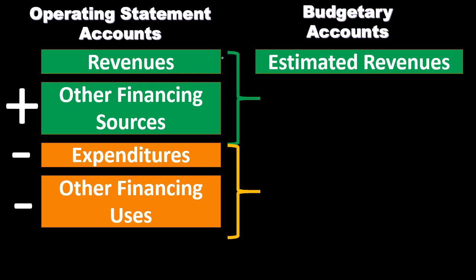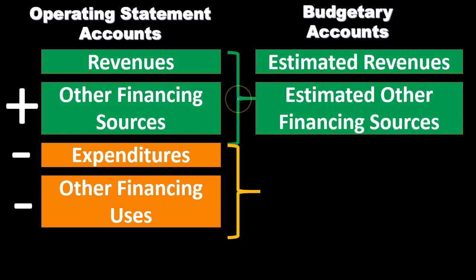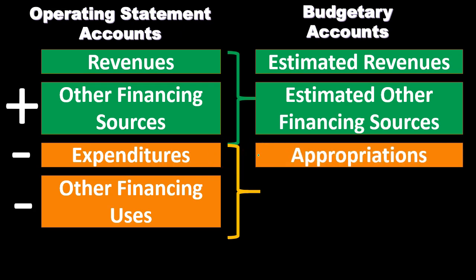Revenues have a credit balance; estimated revenues have a debit balance. Other financing sources are also credits, similar to revenues, and estimated other financing sources are the budgetary account for those, carrying a debit balance. Expenditures, like expenses, have debit balances. The related budgetary account is appropriations — a different name, so you'll need to memorize it — and appropriations carry a credit balance as the budgetary counterpart to expenditures.